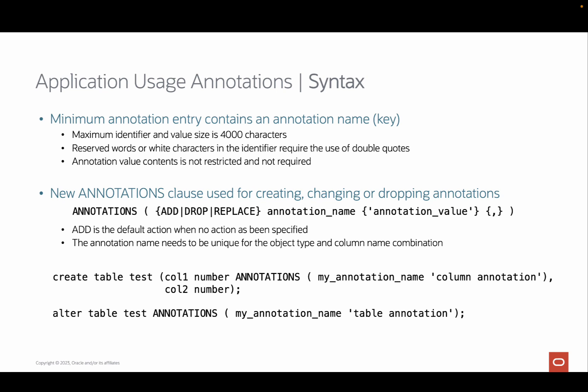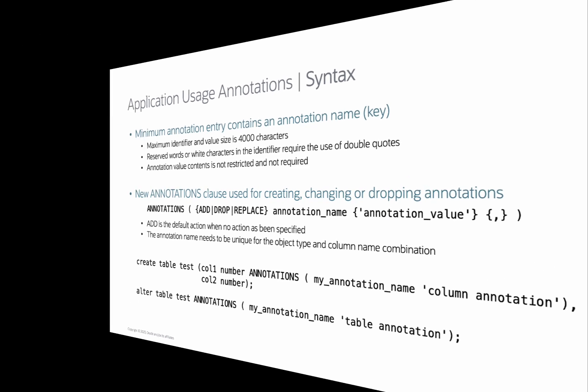You can therefore use the same annotation name — for example, JiraRequestId — to record the Jira request ID in which the addition of a column or table was requested, on multiple objects at the same time.